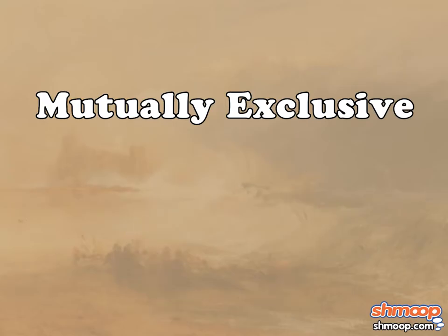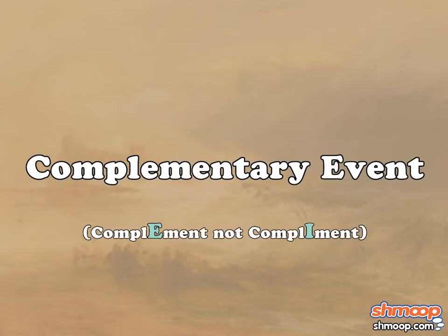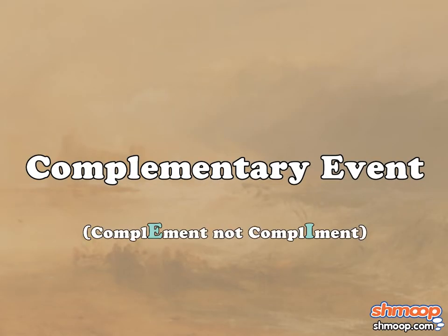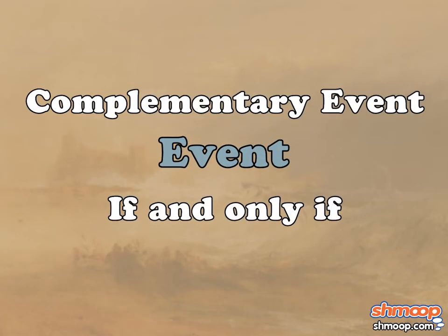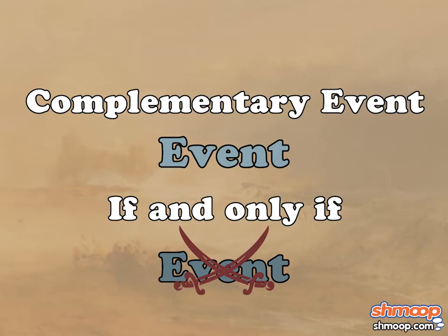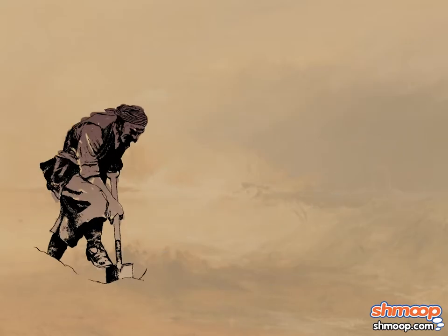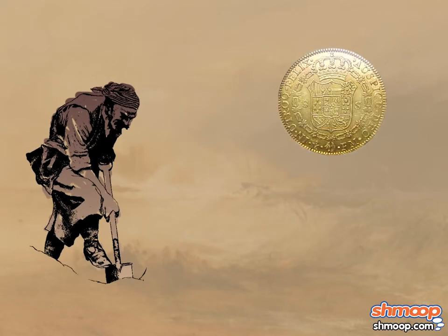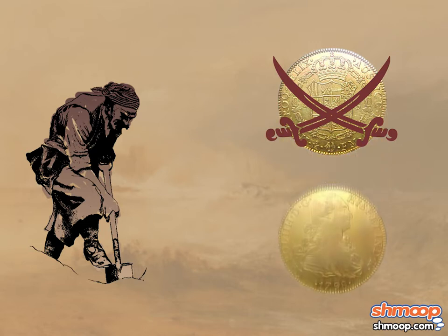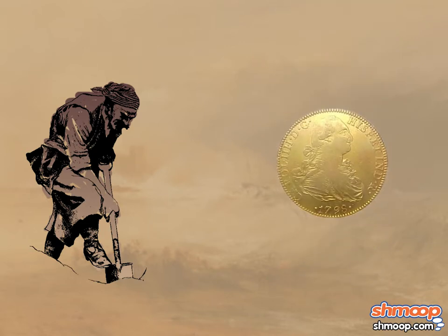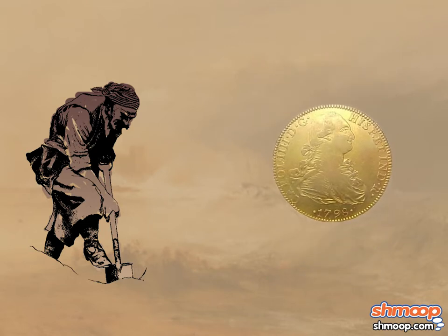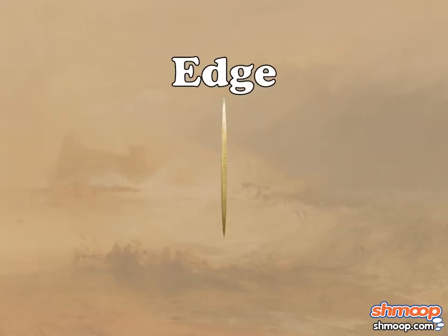Another type of disjoint event is a complementary event. This is when one event occurs if, and only if, the other event does not. For example, a pirate flips a doubloon. If it is not tails, it must be heads, because the events are complementary. And this doesn't count when a coin lands on its edge.